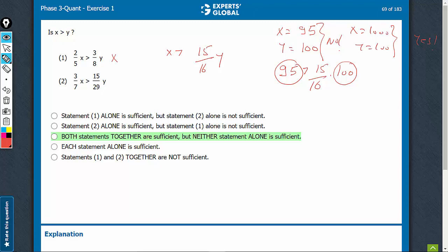This can be simplified to saying that x is greater than 105 upon 87y. Now if a condition were given that x and y are positive integers or positive numbers, this would have sufficed, because when you multiply a number by 105 upon 87, you are increasing it when it is a positive number, but if it is a negative number you are decreasing it. When you multiply 105 upon 87 with a negative number, you are actually reducing the number.